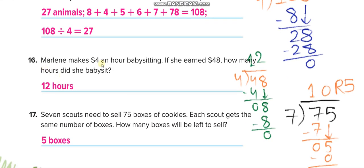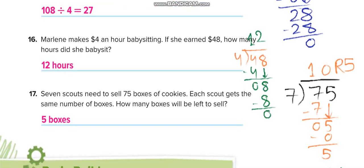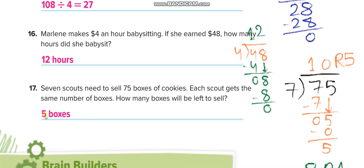This one here, Melvin makes 4 dollars an hour babysitting. If she earned 48, so 48 divided by 4, we did it here. So she worked for 12 hours here. This one, 7 scouts need to sell 75 boxes of cookies. So 75 divided by 7, which is equal to 10 remainder 5. So 5 boxes left over because they asked us, they didn't ask us how many each scout will sell. Of course, 10. How many boxes will be left over? So 5 boxes, the remainder 5.